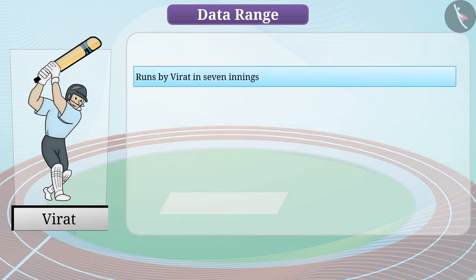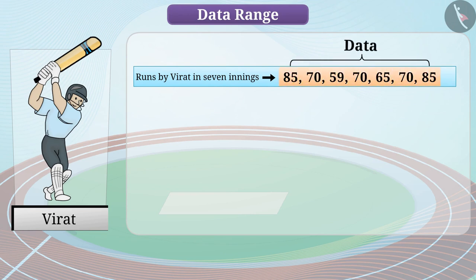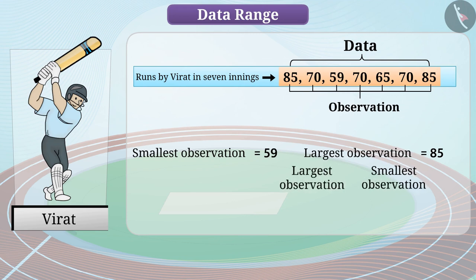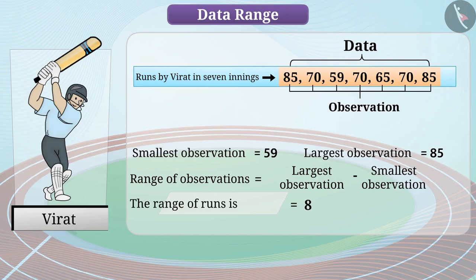The number of runs scored by Virat in his seven innings are 85, 70, 59, 70, 65, 70, 85. This essential numerical information can be referred to as data and each number as an observation. The smallest observation is 59 and the largest is 85. Subtracting the smallest from the largest gives us the range: 85 minus 59 equals 26.